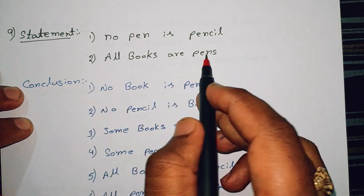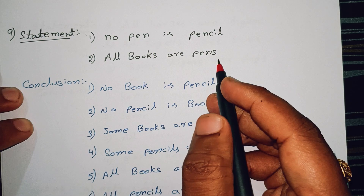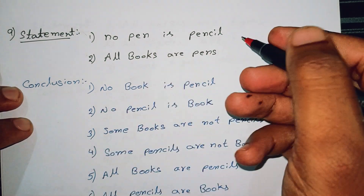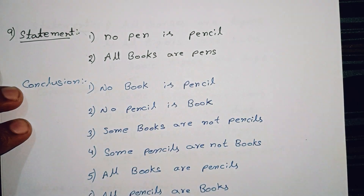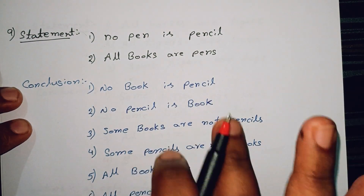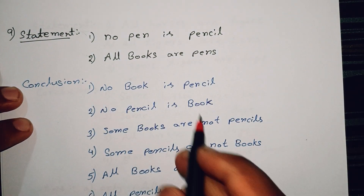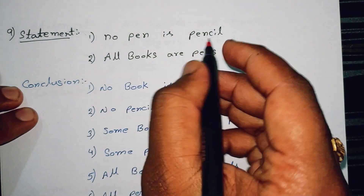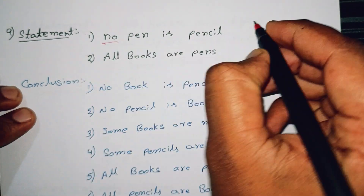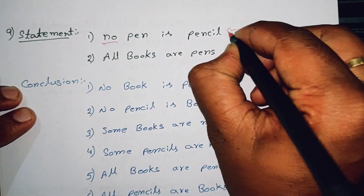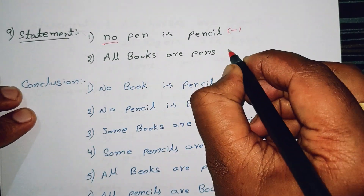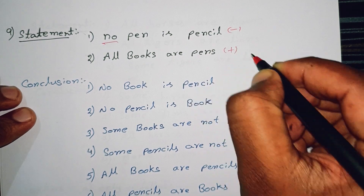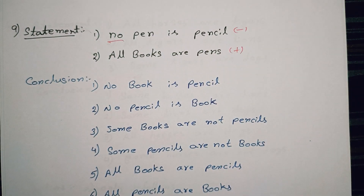So, no pen is pencil. All books are pens. First, we will check whether each statement is negative or positive. 'No pen is pencil' — here 'no' makes this a negative statement. 'All books are pencil' — this is a positive statement.